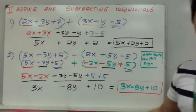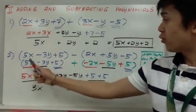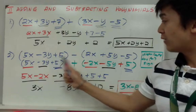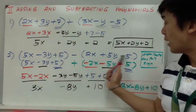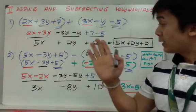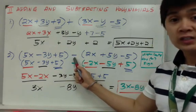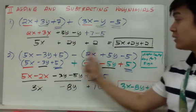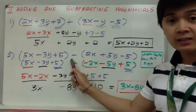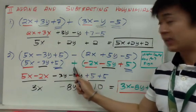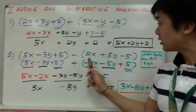For 5x - 3y + 5 minus (2x + 5y - 5), whenever you subtract polynomials, all you have to do is switch all the signs of your second group of polynomials. Since you are subtracting, I'm going to switch it to addition.